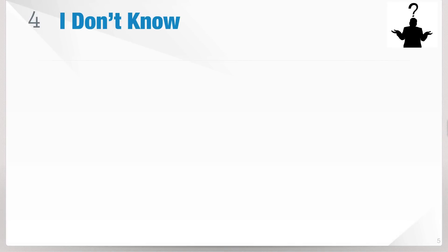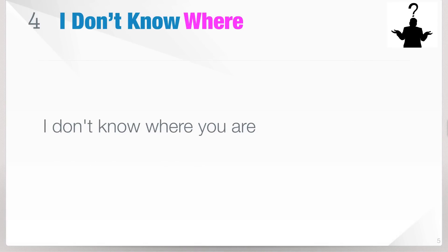The fourth expression is 'where.' 'Where' in French is où, with the accent on the letter U. So: 'I don't know where you are' — je ne sais pas où tu es. If you want to speak fluently, you can say je ne sais pas où t'es, because t'es is the contraction of tu es. If 'you are' is plural or formal, you say: je ne sais pas où vous êtes.